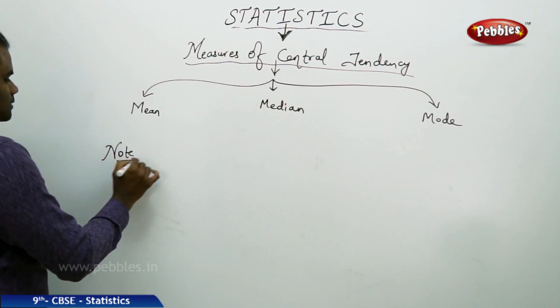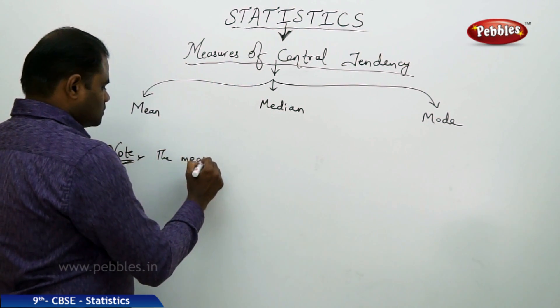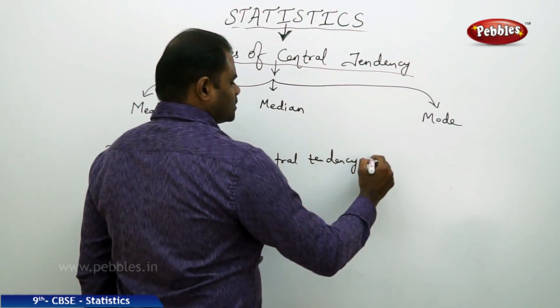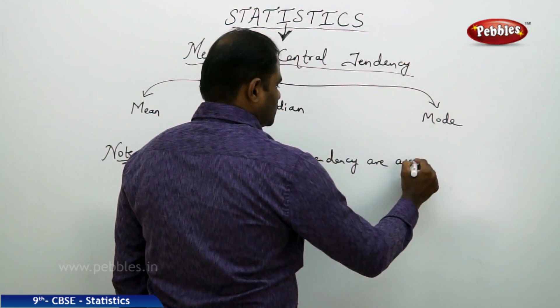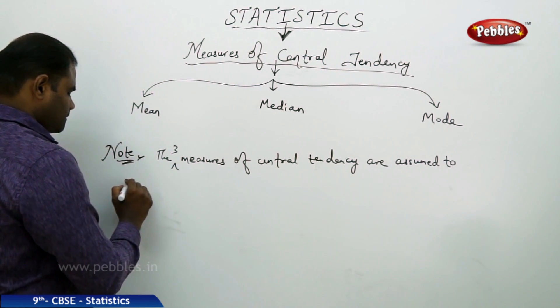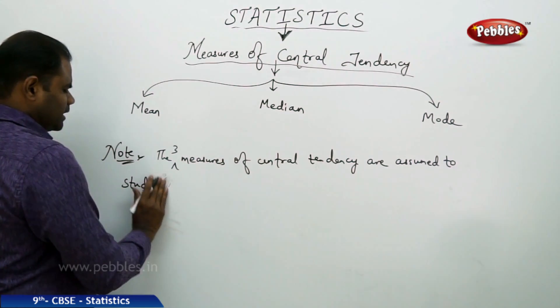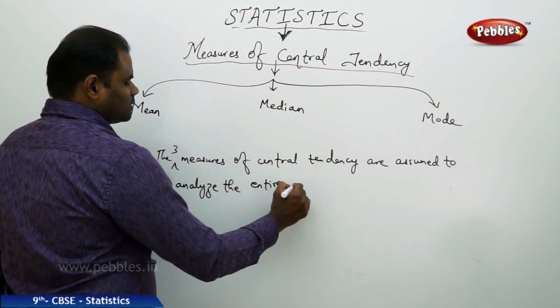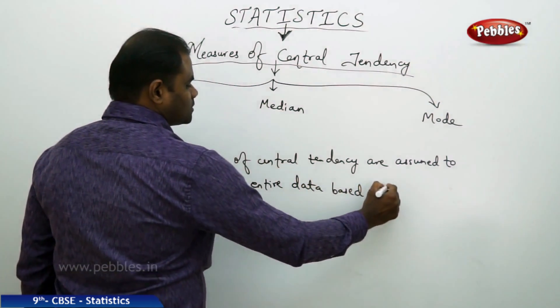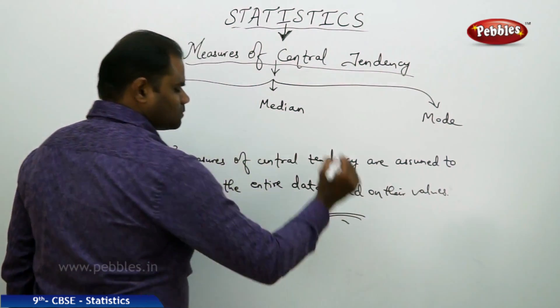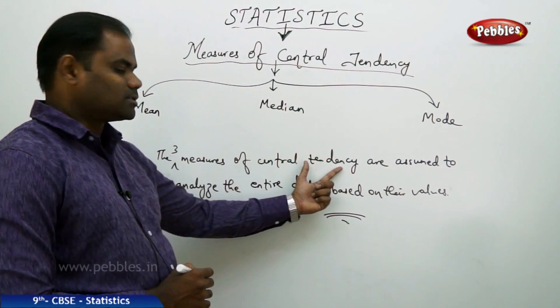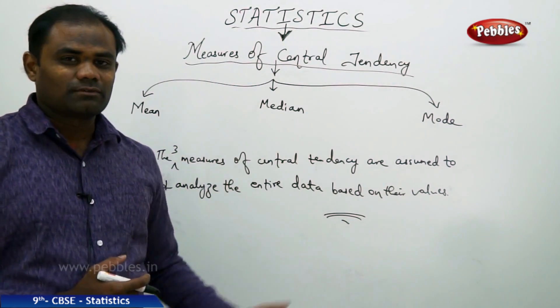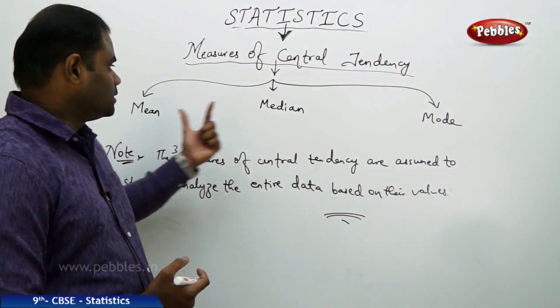So let's take a note that the three measures of central tendency are assumed to study and analyze the entire data based on their values. So this is one of the significance of measures of central tendency. Let's see in brief mean, median, and mode.